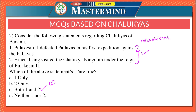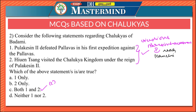However, Pulakeshi 2 suffered a humiliating defeat at the hands of Narasimha Varman 1 in the later expedition against the Pallavas. Narasimha Varman 1 captured and destroyed Vatapi. The Pallavas plundered the capital Vatapi near Kanchi.